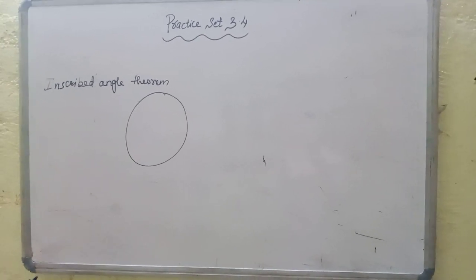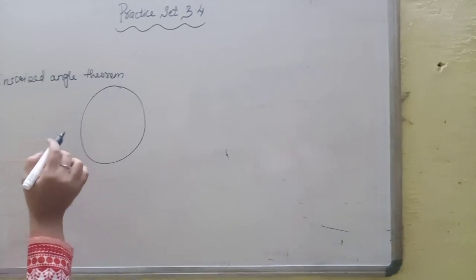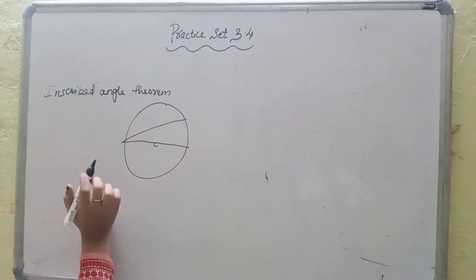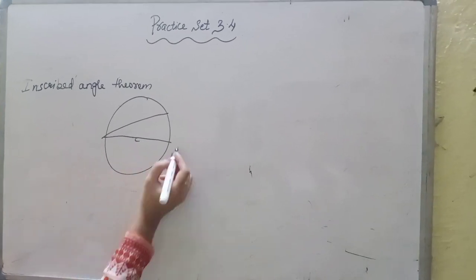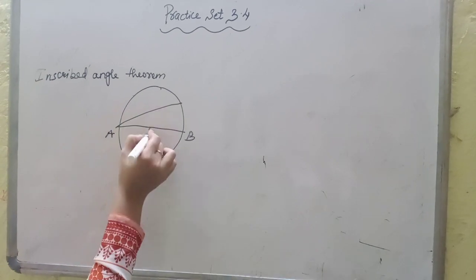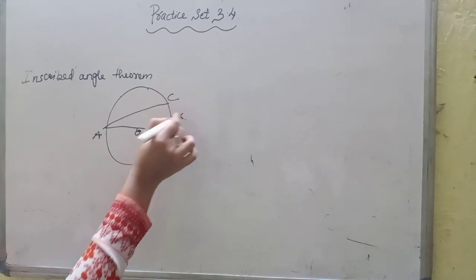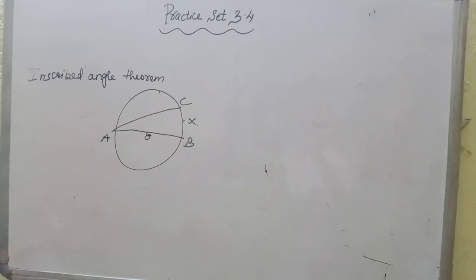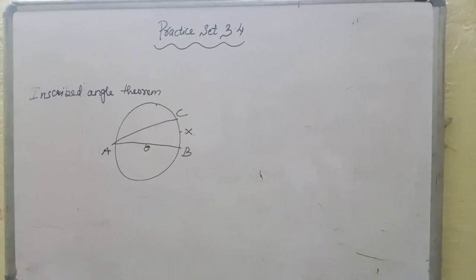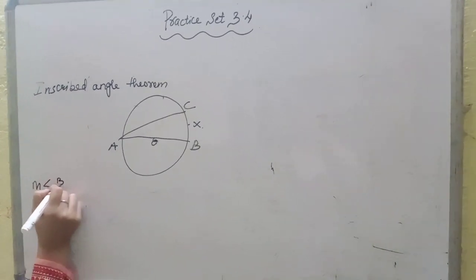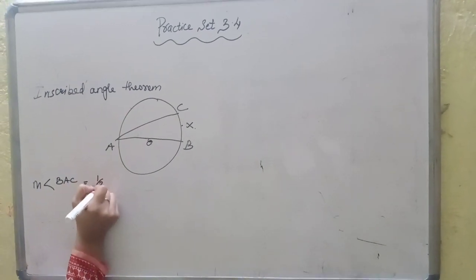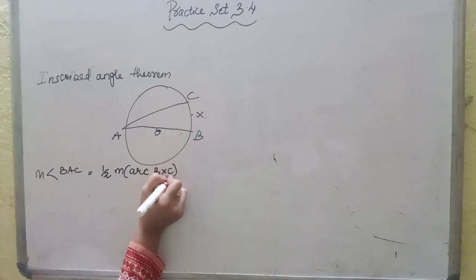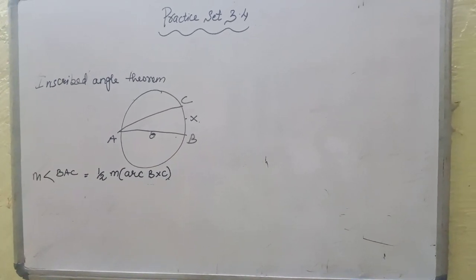In this, there is one circle. We have to prove in this, the measure of an inscribed angle is half of the measure of arc intercepted by it. Measure of angle BAC, this angle, is half of measure of arc BXC. This is inscribed angle theorem.